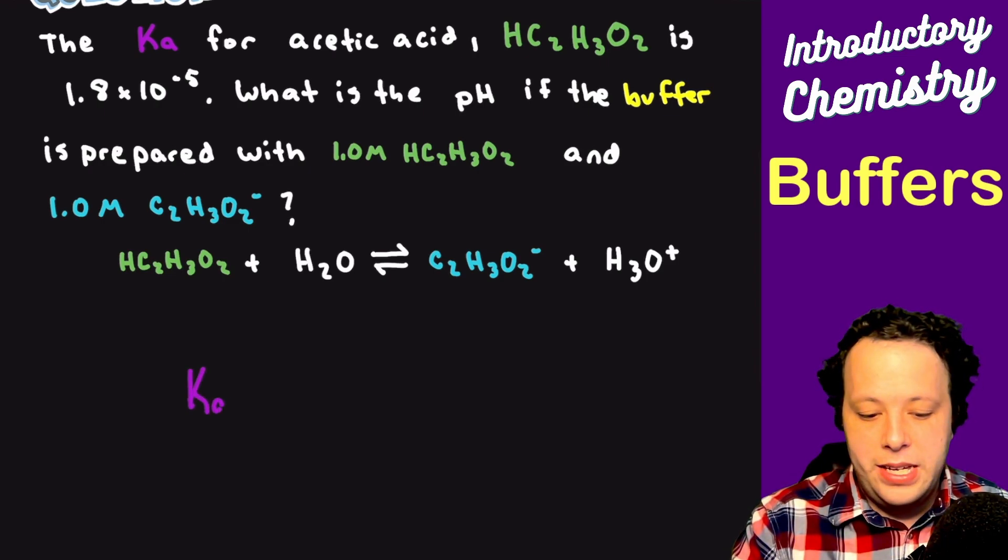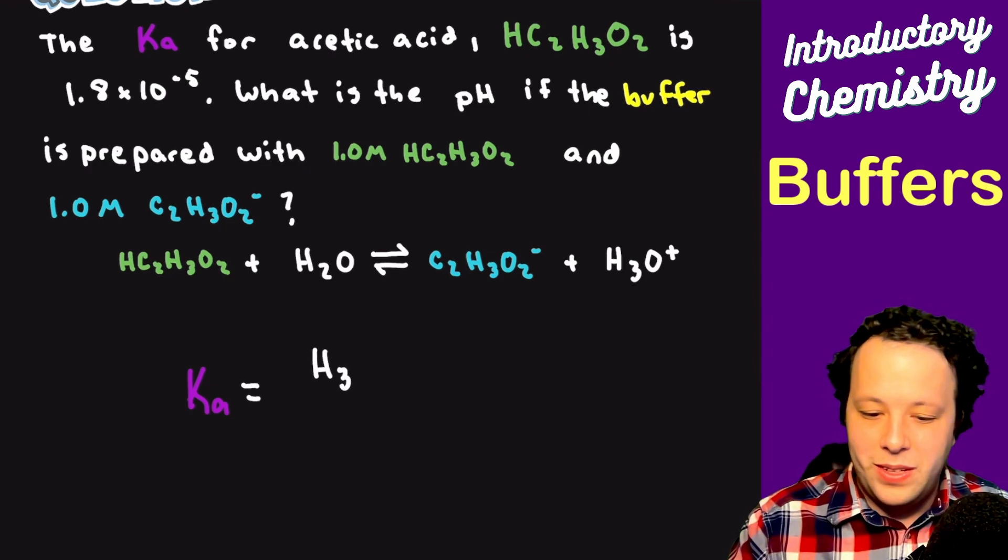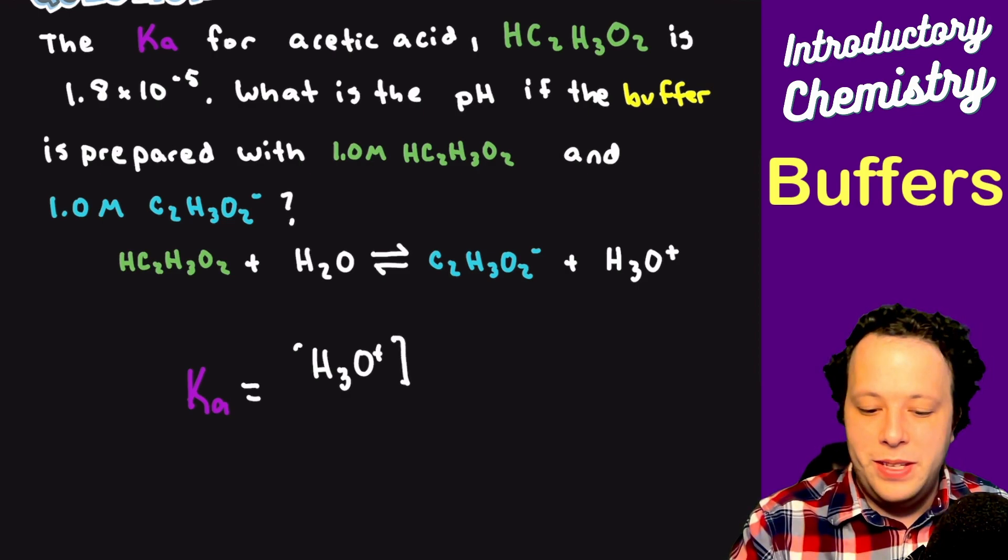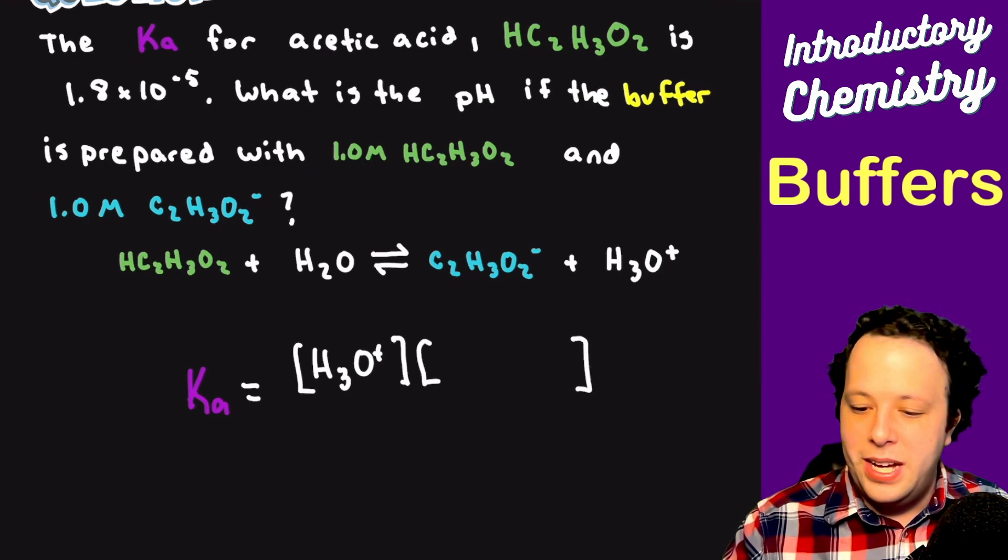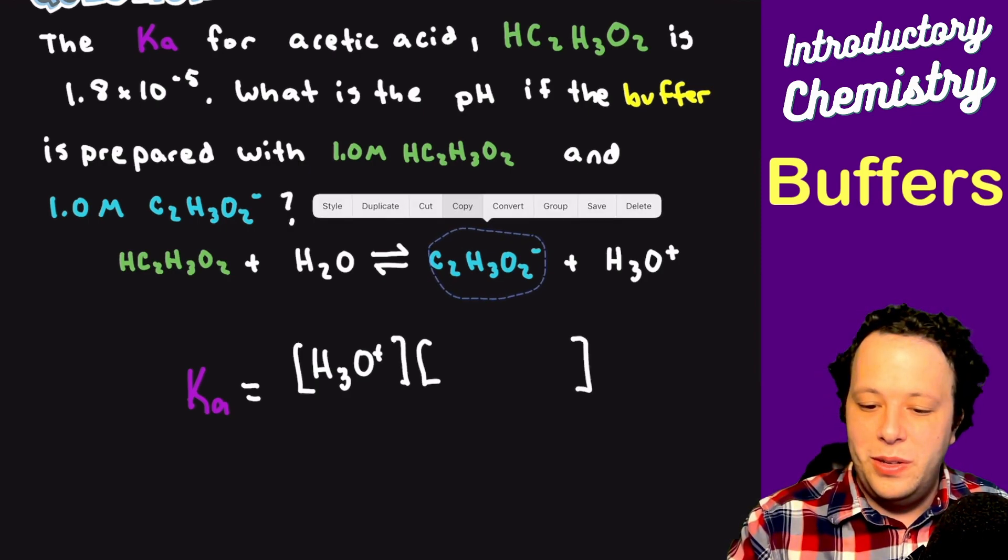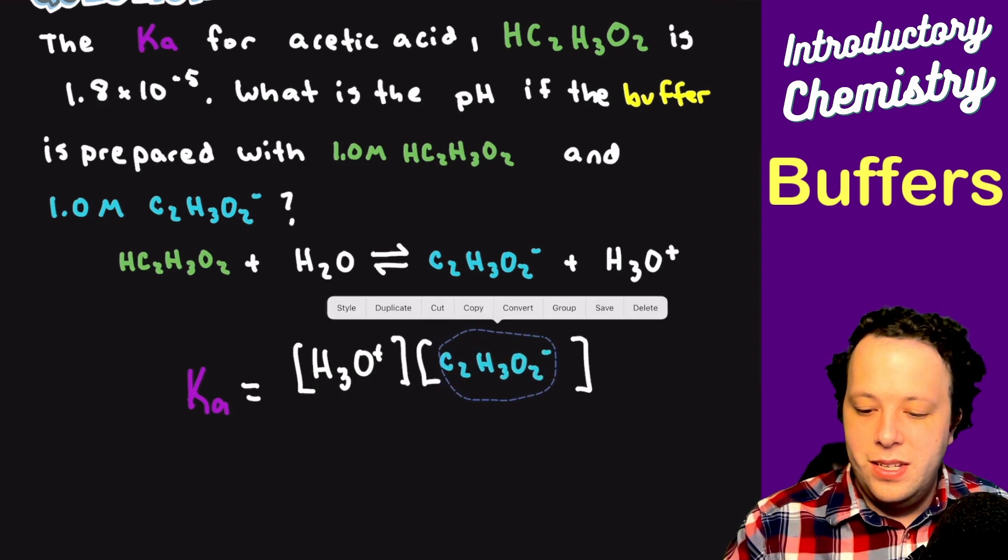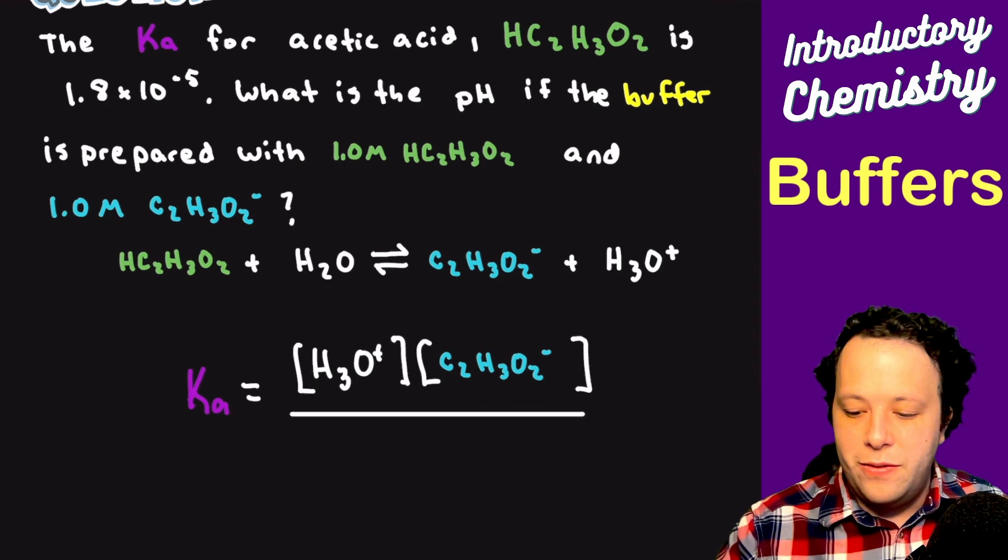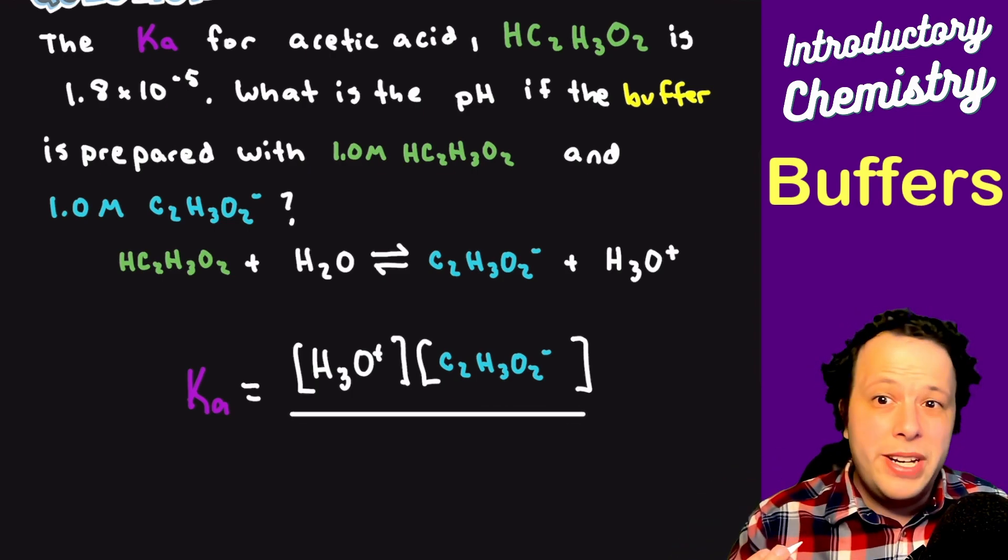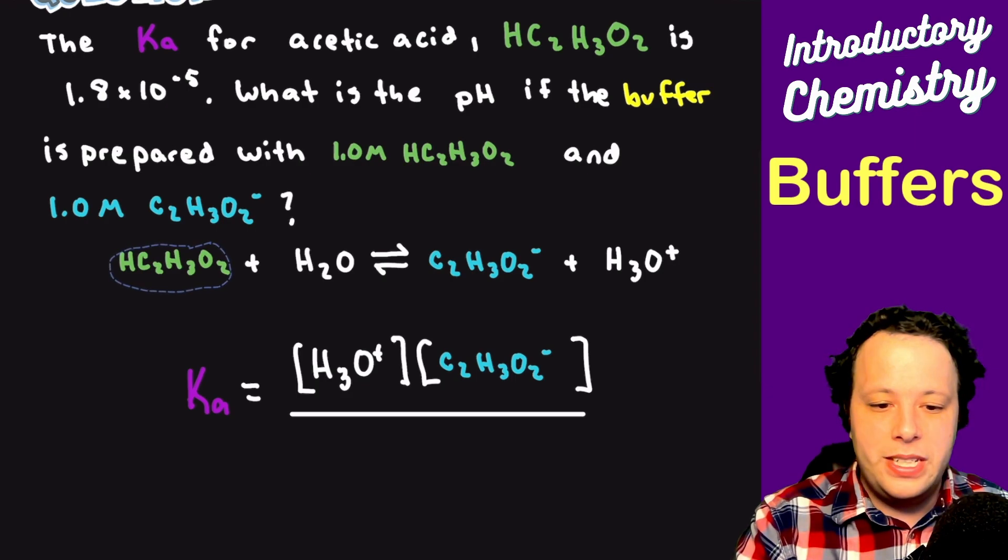So if we have our Ka, we will put our products, which in this case is H3O, or H3O+, and we have our acetic acid. And remember, all these are referred to in brackets as well. So we have our products all over the reactants. Then we'll take that expression. From here, what we can do is rearrange it to actually solve for what is the pH.